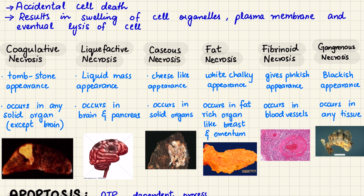Caseous necrosis has a cheese-like appearance under the microscope. It is most commonly associated with TB and certain fungal infections, with tissue appearing soft and crumbly due to a combination of coagulative and liquefactive necrosis. Fat necrosis is specific to fat-rich tissues like the breast or pancreas — lipases break down fat releasing fatty acids, which combine with calcium forming white chalky deposits. It's often seen in acute pancreatitis or after trauma to fatty tissues.